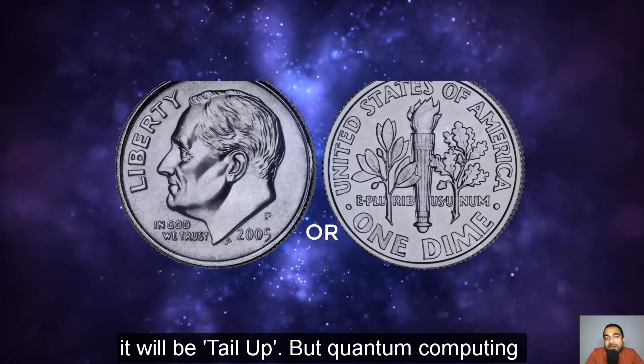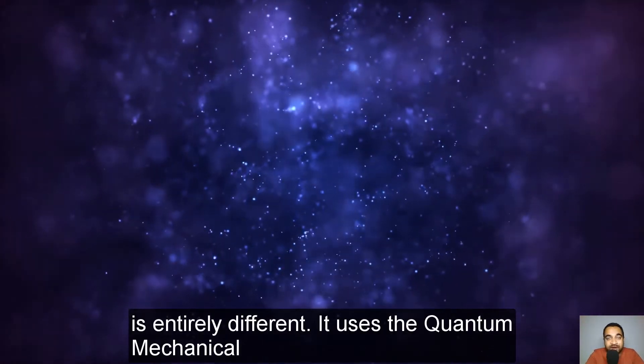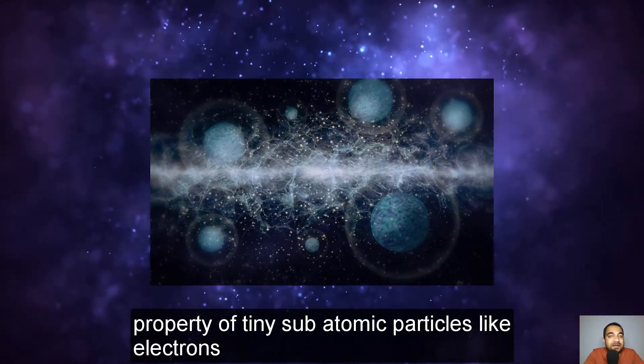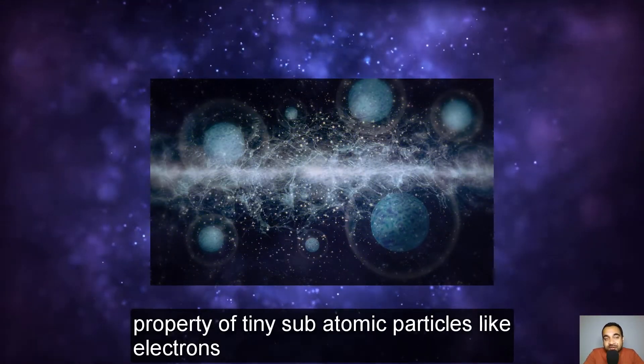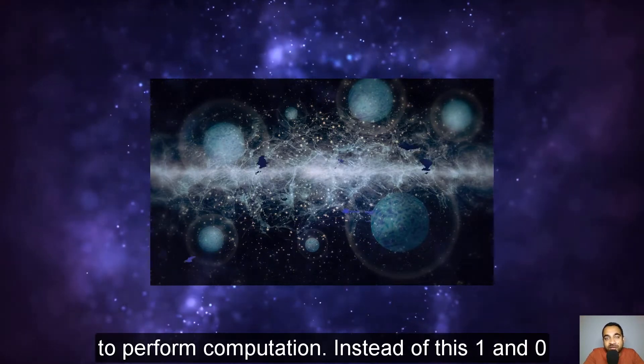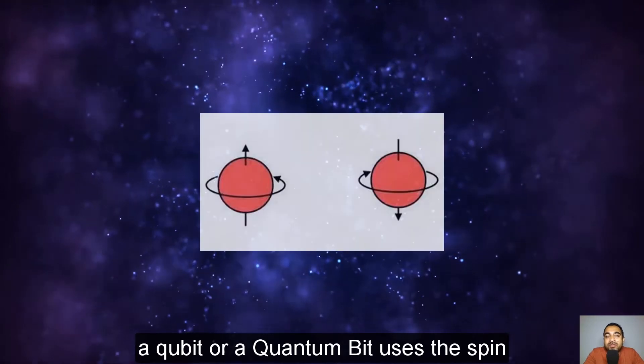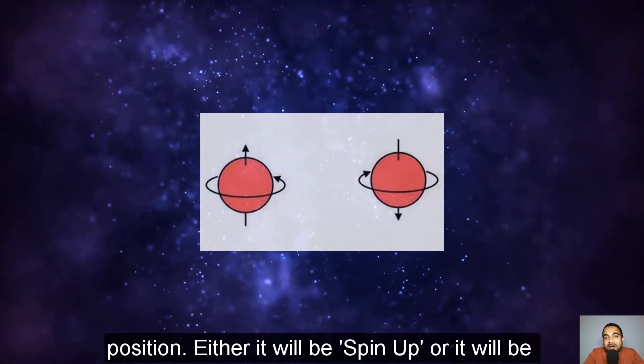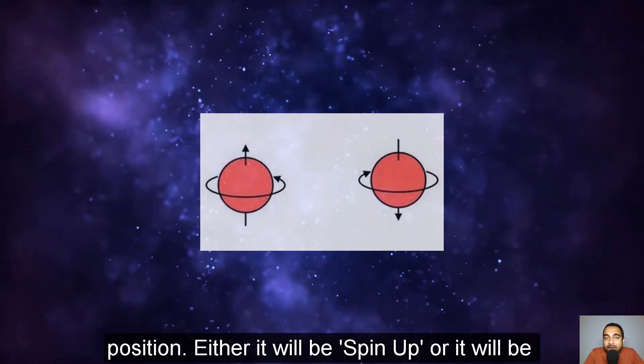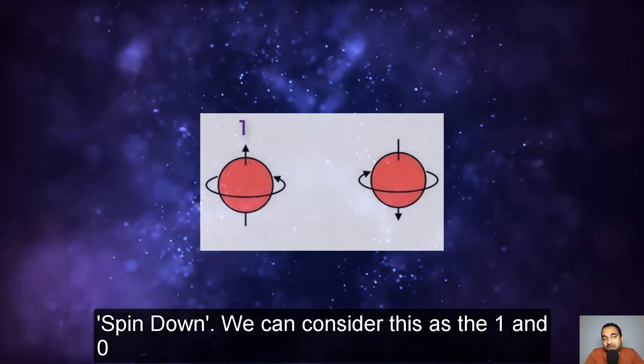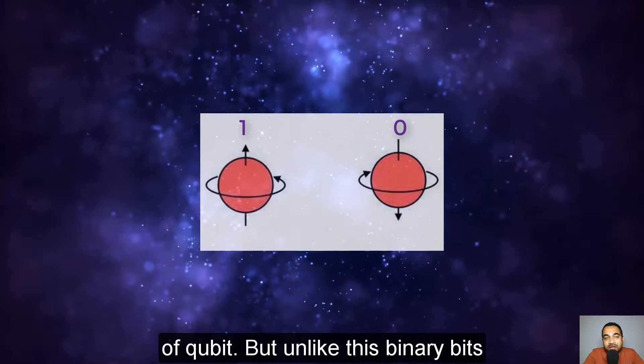But quantum computing is entirely different. It uses the quantum mechanical property of tiny subatomic particles like electrons to perform computation. Instead of 1 and 0, a qubit or quantum bit uses the spin position. Either it will be spin up or it will be spin down. We can consider this as the 1 and 0 of qubit.